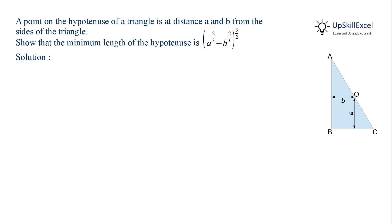A point on the hypotenuse of a triangle is at a distance of A and B from the sides of the triangle. Show that the minimum length of the hypotenuse is A raised to 2 over 3 plus B raised to 2 over 3, whole raised to 3 over 2.